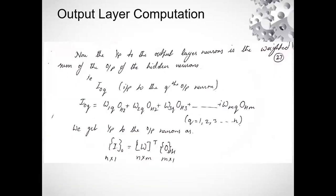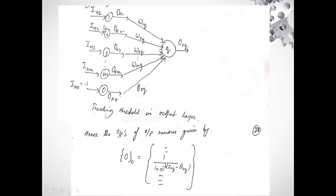What we have to calculate at the output layer is the input at the output layer and the output at the output layer. For output layer computation, we are going to understand this diagram. This is just a part of the starting diagram in which we have taken only the hidden layer and the output layer into consideration. In the output layer, we have considered the kth neuron — the kth node. We are showing the computation over one node, and it will be the same for all nodes in the output layer.